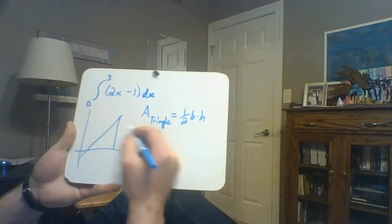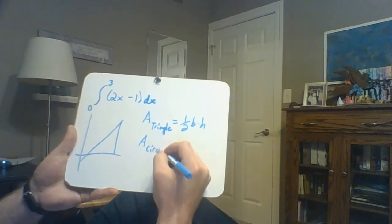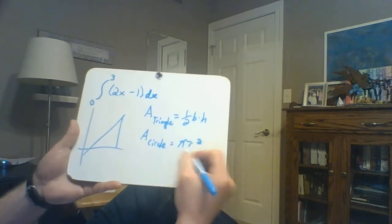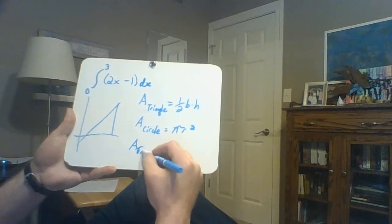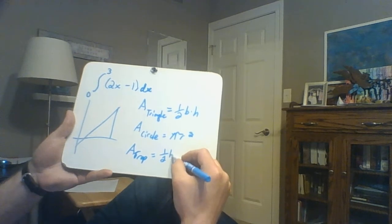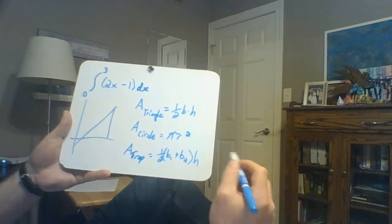So all of these will be doable with geometry formulas. So the area of a circle, just a reminder, pi r squared, if it's a semicircle, just divide that by two. Area of a trapezoid is 1 half base 1 plus base 2 times height.